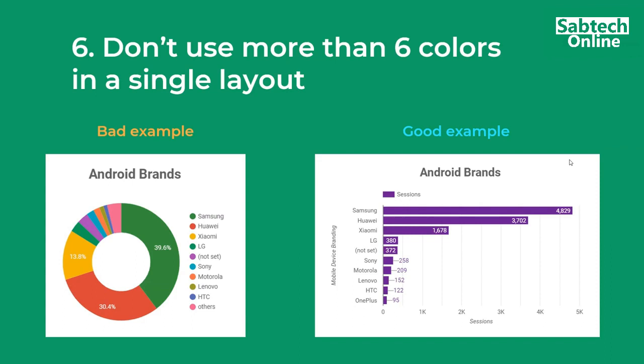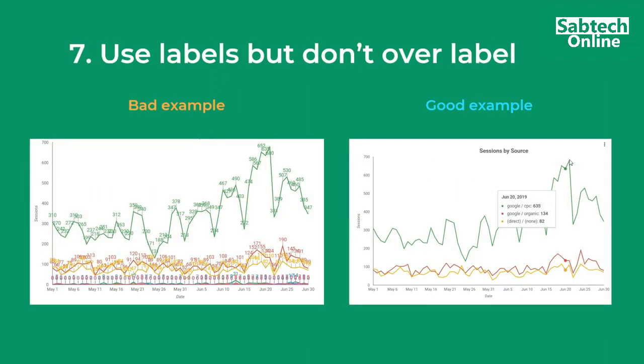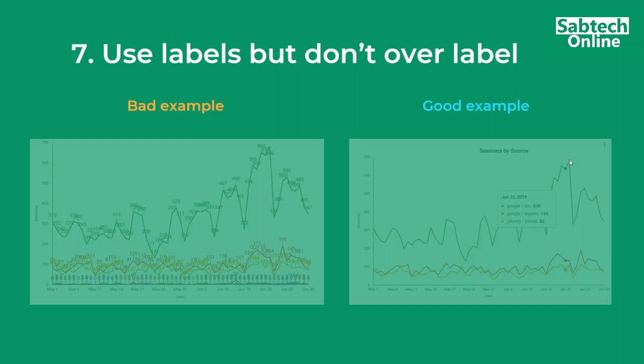Tip six: don't use more than six colors in a single layout. Never use too many colors. Tip seven: use labels but don't overlap them. The crowded chart on the left is overcrowded because of the labels. You don't need to include labels directly in the chart — just include a table below to represent the data. The good example is on the right: keep it visual but place labels in a separate table portion rather than in the chart itself.